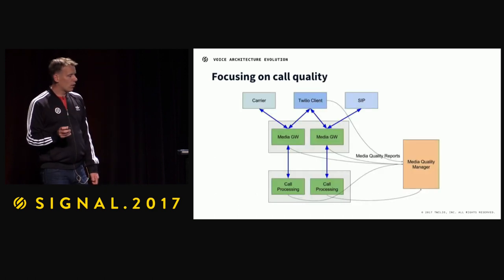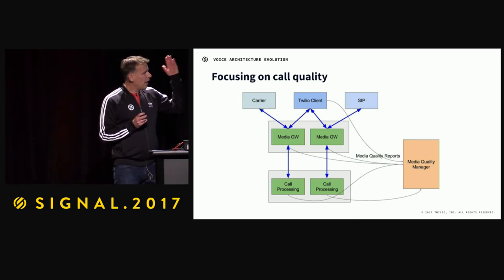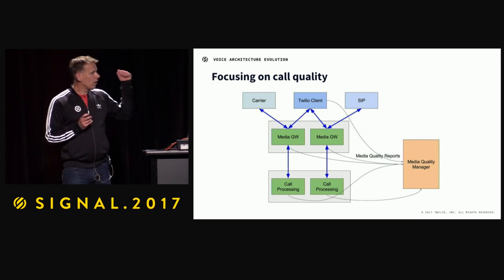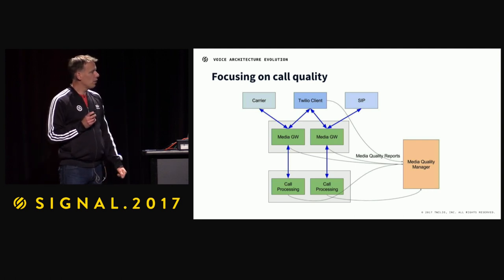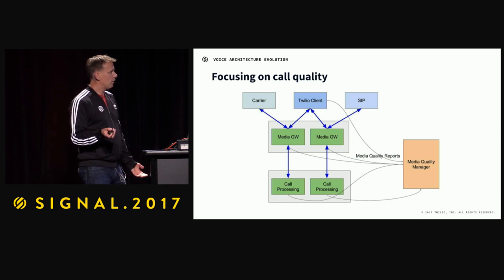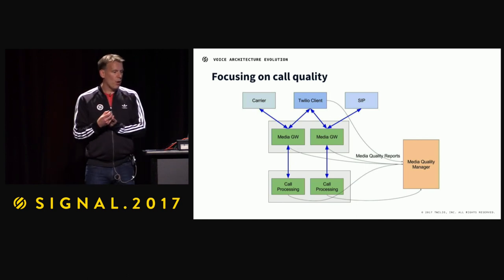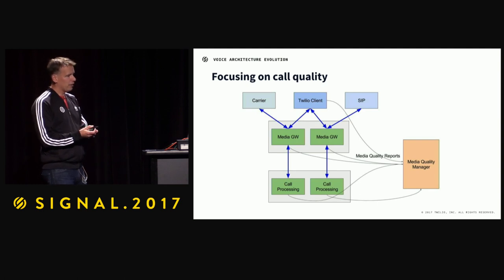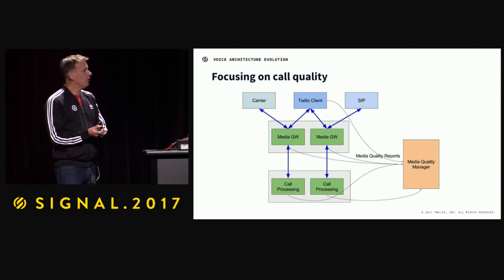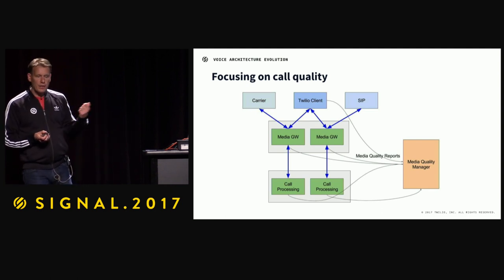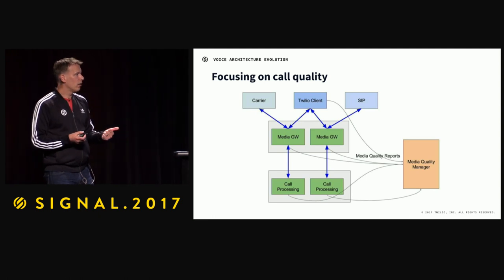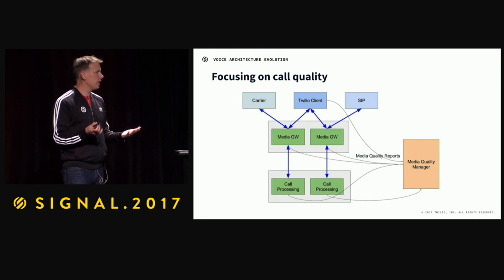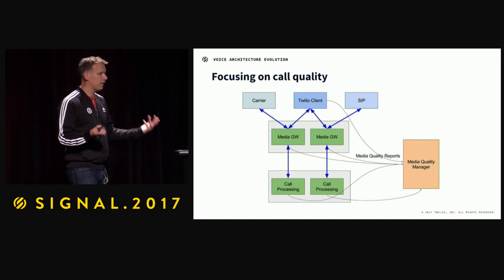I also mentioned call quality, and for voice calls this is super important. The blue lines represent media being sent from carriers, from clients, from SIP clients, through our system — gateway nodes, call processing nodes. Previously we didn't have a good understanding of what the quality was. But we've introduced probes — agents on each node — that continuously monitor call quality and send this to the media quality manager. This allows us to change call routing if a carrier turns out to be bad. We have six different carriers for most of the big regions, so we can take a carrier out of circulation if it has quality problems.